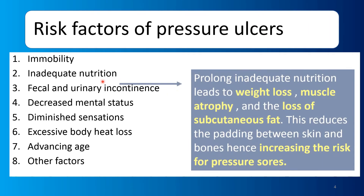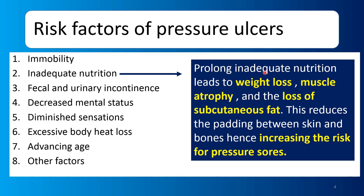If you don't have a proper diet for a long time, what will happen? Weight loss and muscle atrophy — the size of your muscles will reduce. The loss of subcutaneous fat will also occur. You have underlying skin fat as padding. So if a person is thin or lean, the padding between bone and skin is reduced, and pressure sores will be more likely.